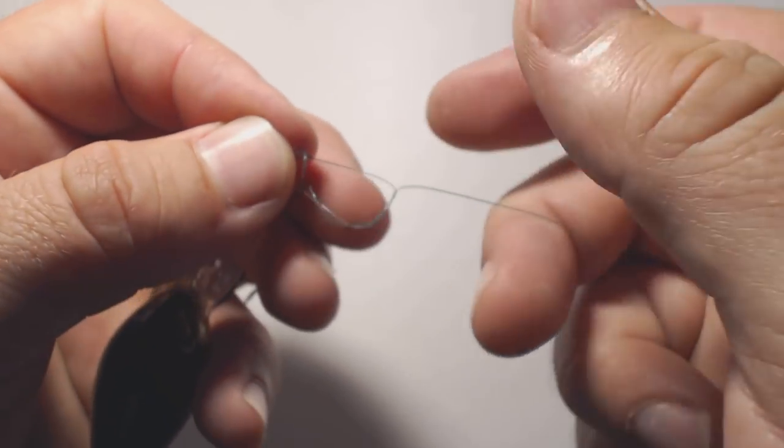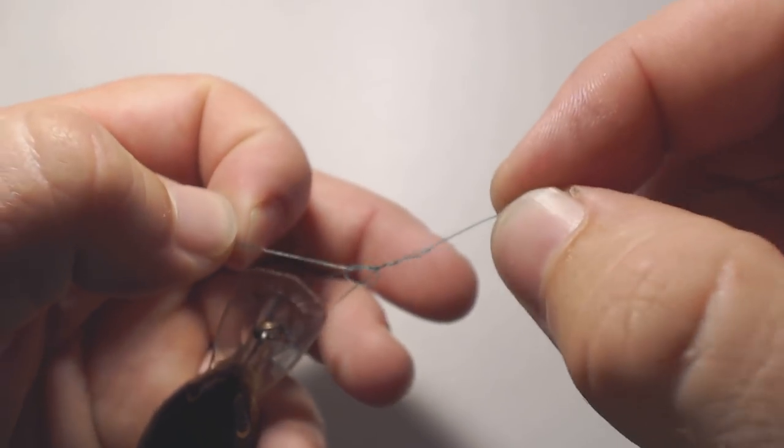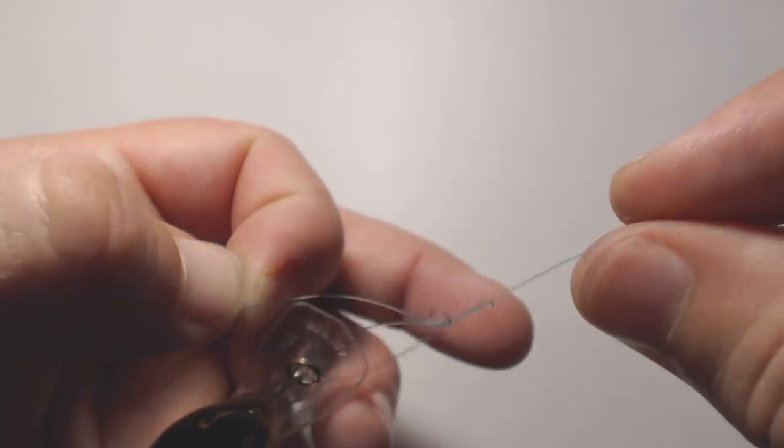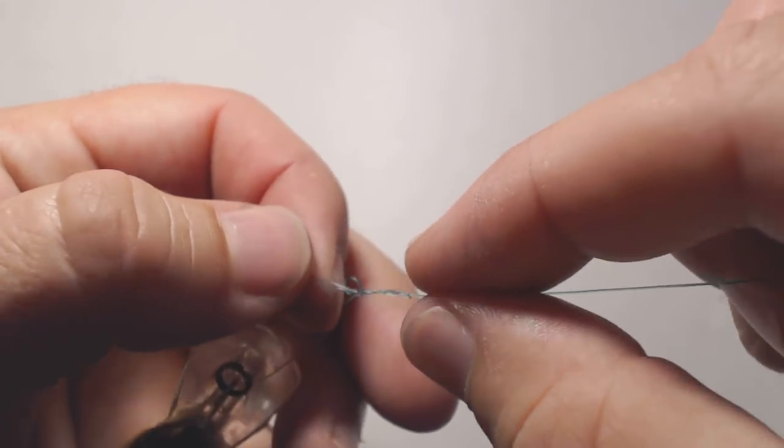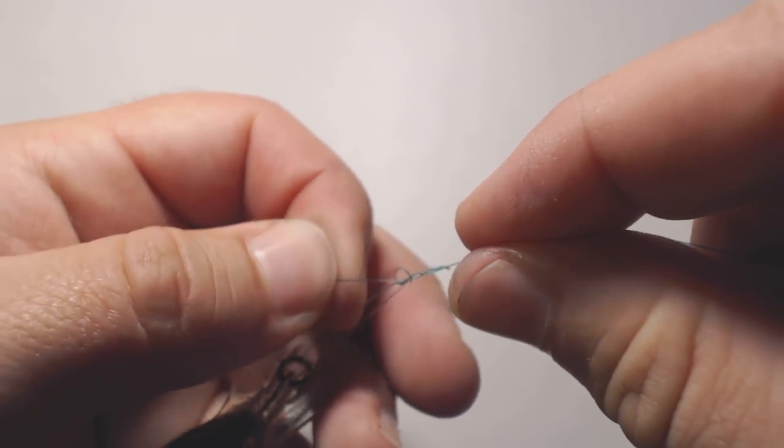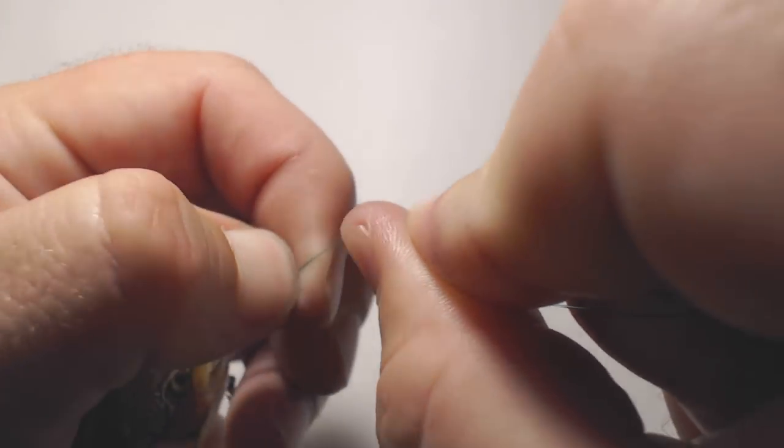And then to tighten it, pull the base end here. As you can see, this is starting to come together and it has a little bit of a loop. That loop that you started with is going to be what stops the knot from going down farther.